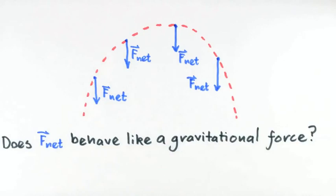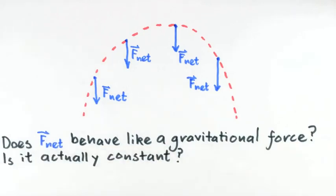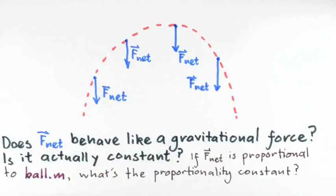How about checking to see if f net is really constant and might be due to a weight force that is proportional to the mass of the system? Can you find a constant of proportionality? Try this and see what you can learn. We'll defer further discussion about this to the class forum.